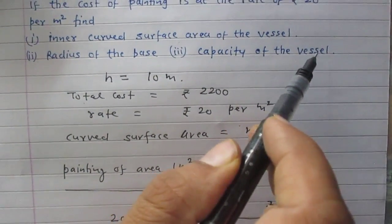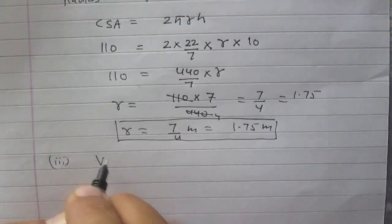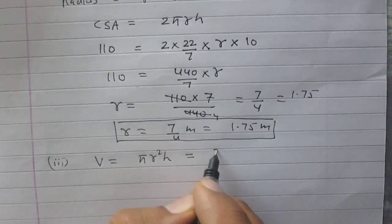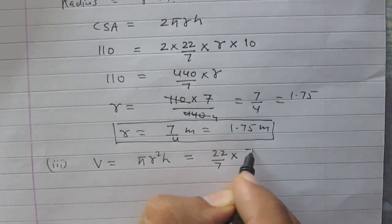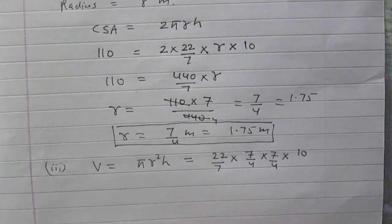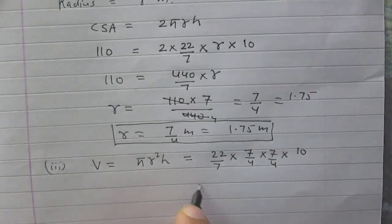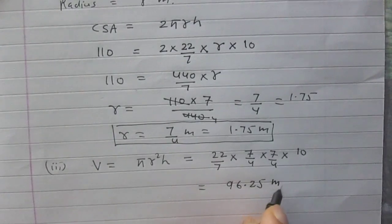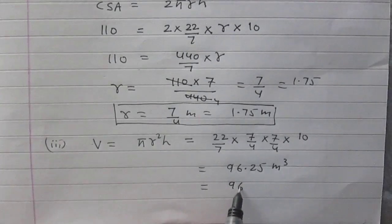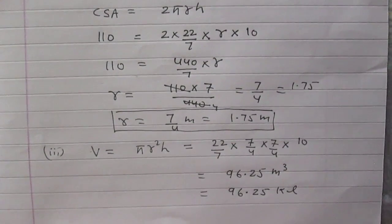In the third part, we are to find the capacity of the vessel. To find capacity, we need the volume of the cylinder. The formula for volume of a cylinder is πr²h, where r is the radius and h is the height. Substituting: (22/7) × (7/4)² × 10. After calculation, we get 96.25 meter cube. Since 1 meter cube equals 1 kiloliter, the capacity of the cylindrical vessel is 96.25 kiloliter.